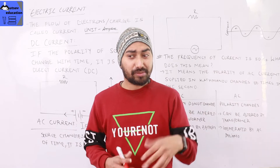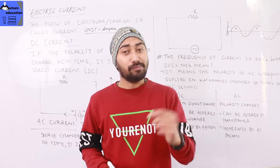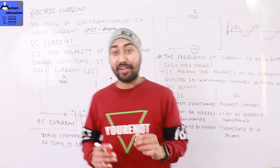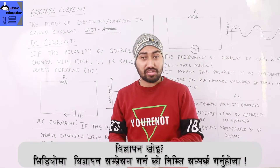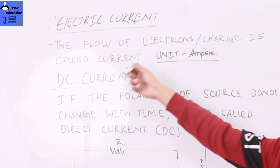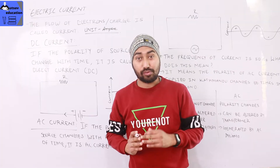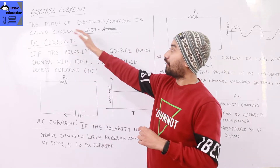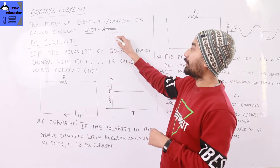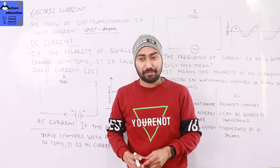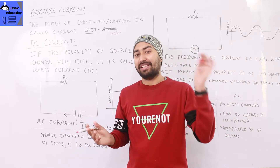Electric current is defined as the movement of charge or electrons. The flow of electrons or charge is called electric current. The unit of electric current is ampere. Ampere is called a fundamental unit — this is a very important question for class nine.